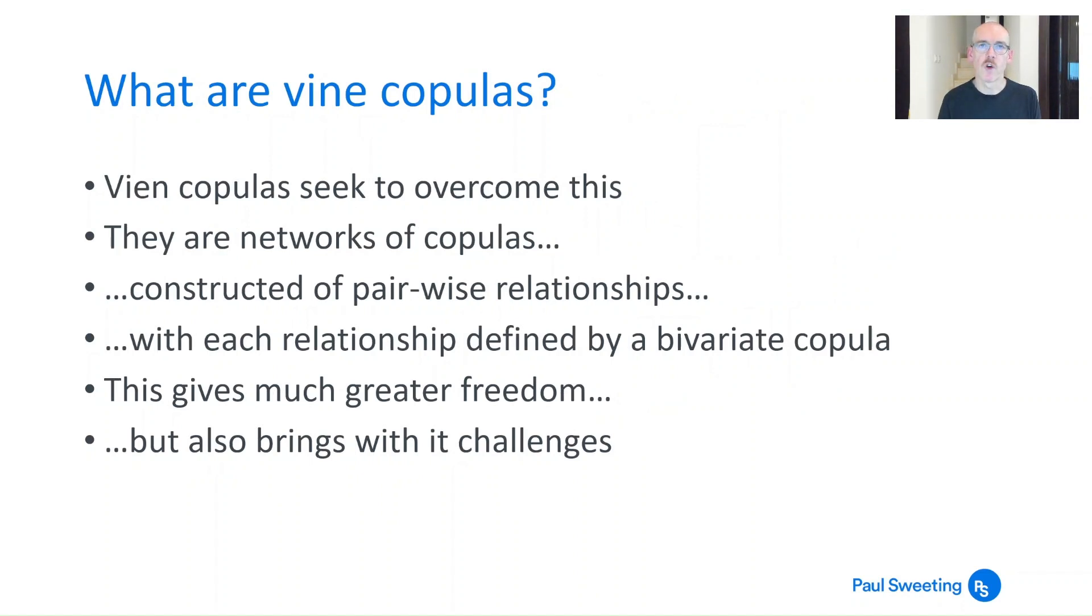So vine copulas are a solution. They seek to overcome this by using a network of copulas constructed using pairwise relationships with each relationship defined by a bivariate copula. So this gives you much greater freedom because for each pair of relationships you can specify things like not just the correlation but the fatness of tails as well, the shape of that relationship, which is very helpful but it does bring with it a few challenges.